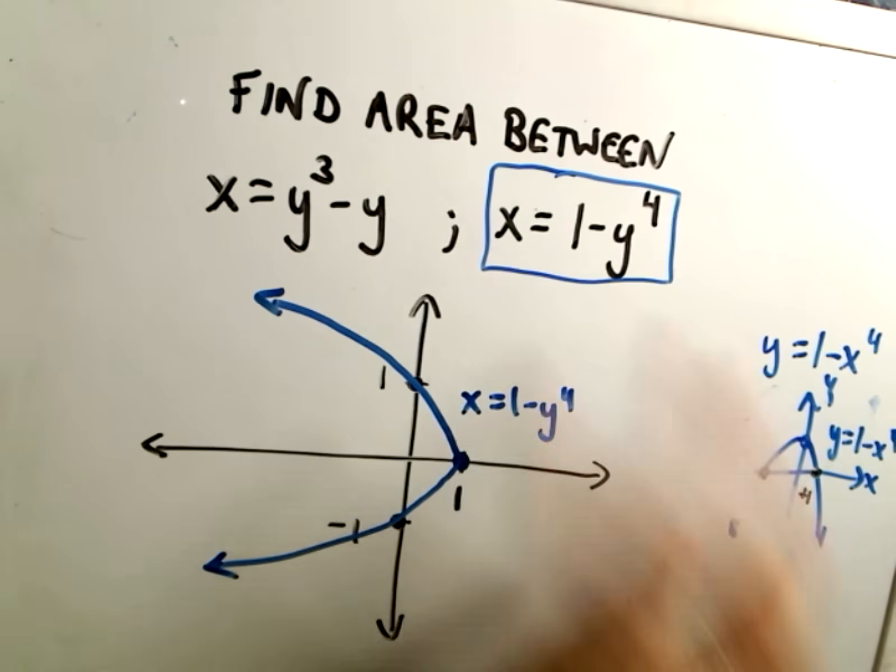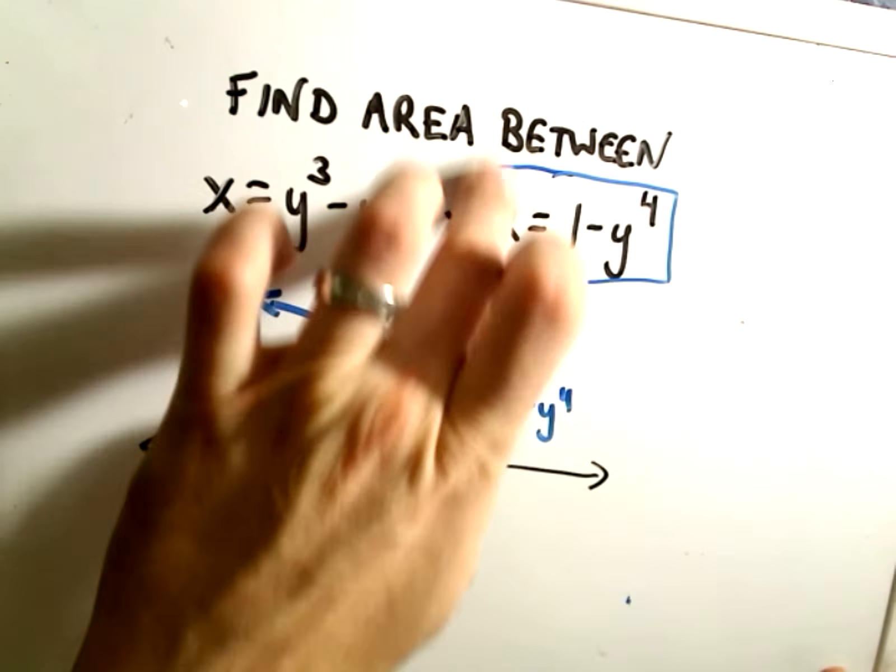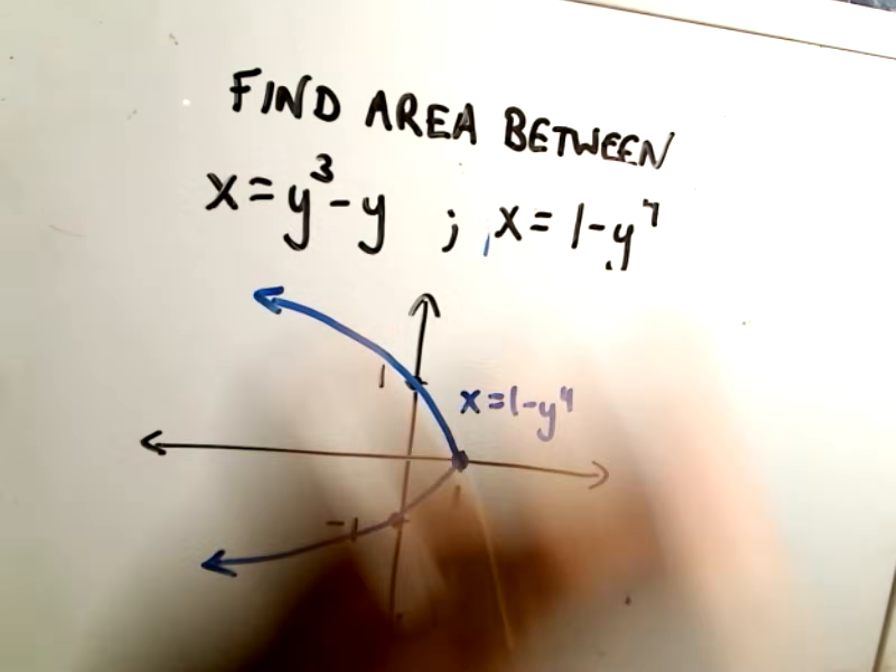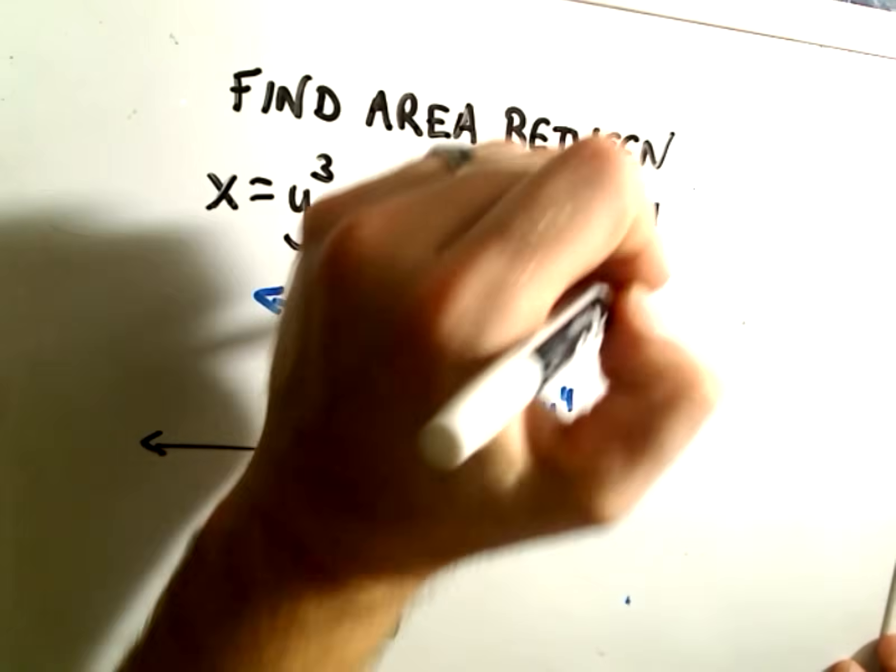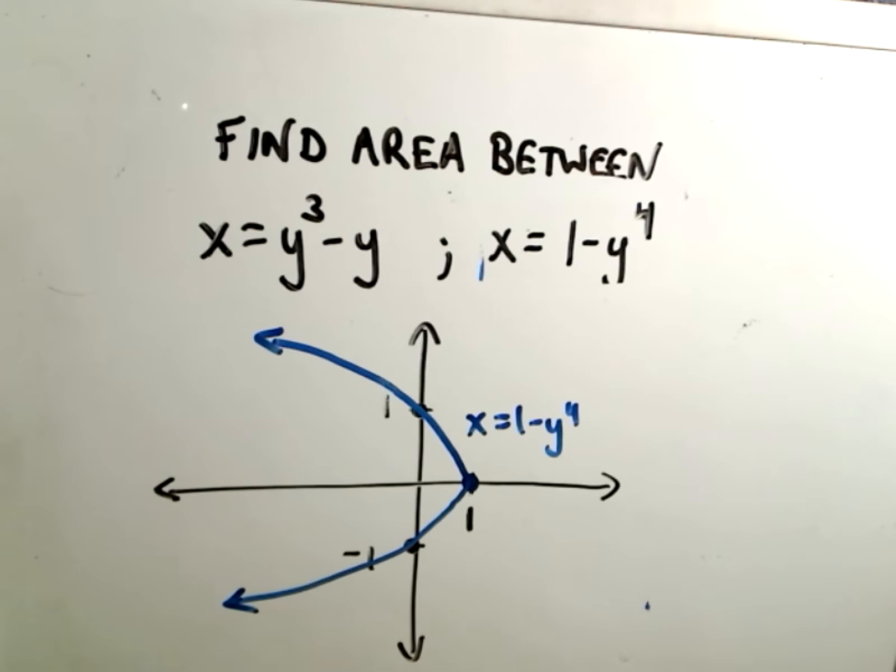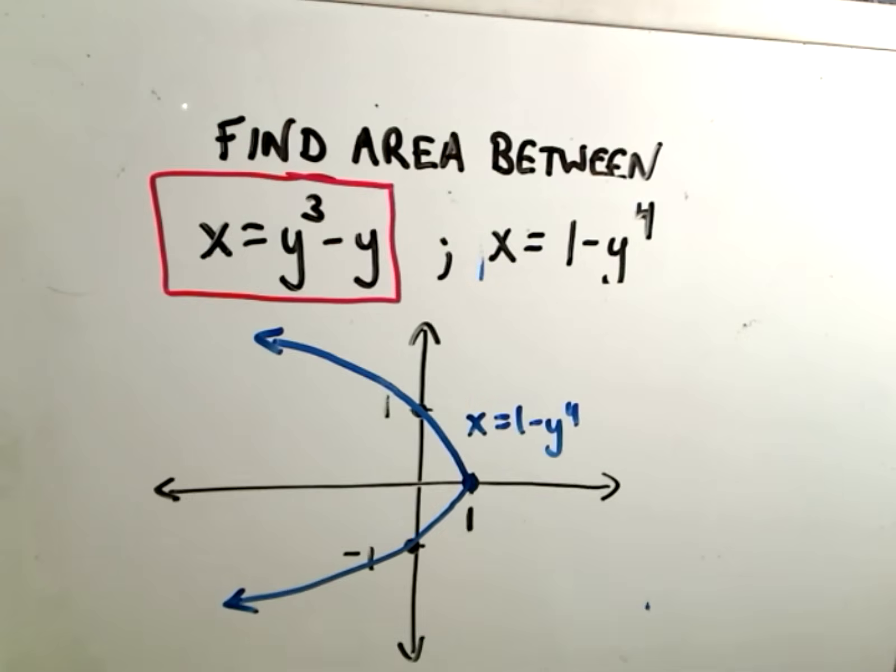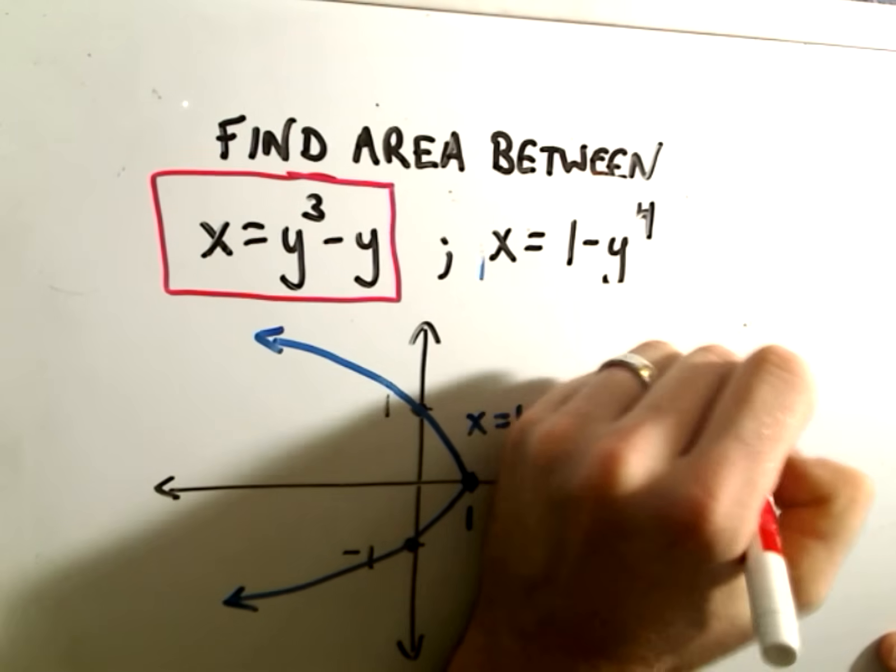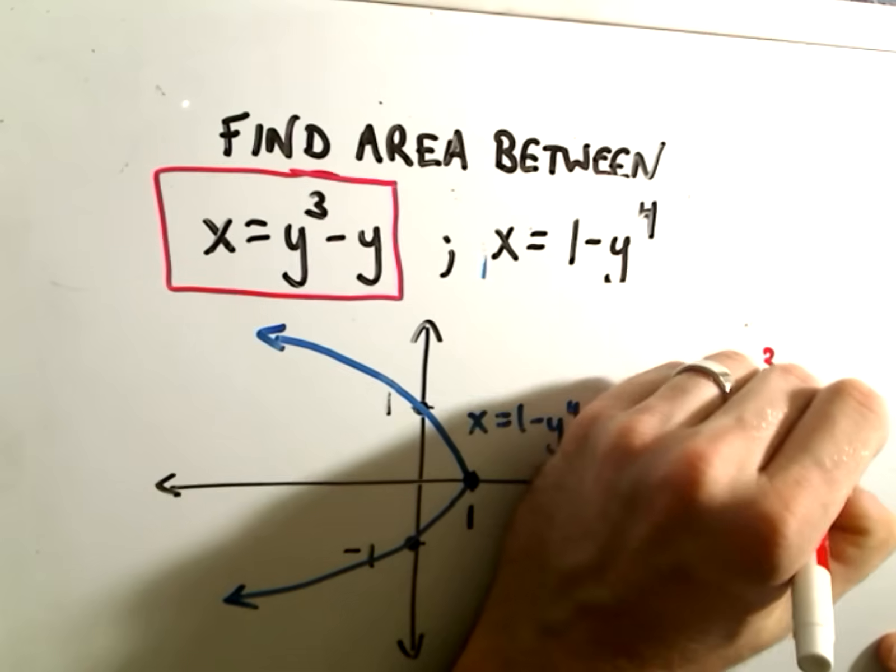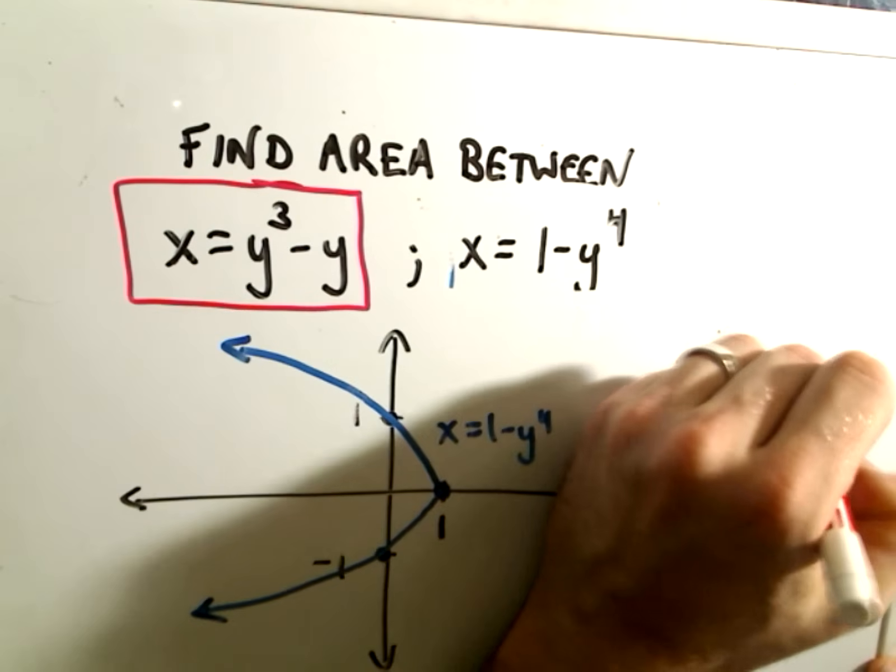And now, let's graph the other one as well. So x equals y cubed minus y. You could do the same kind of reasoning by analogy we just did. Another useful trick is just find points of intersection.